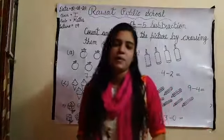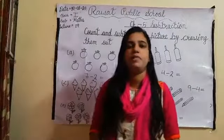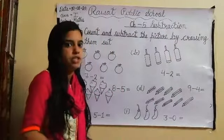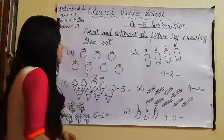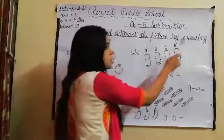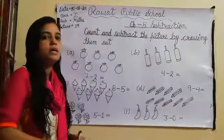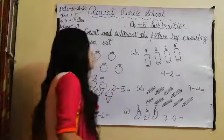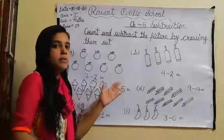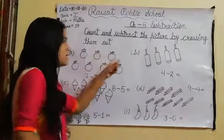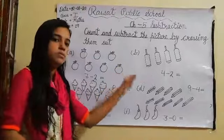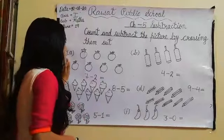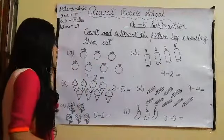Good morning to all, I hope you all are well. In today's class we will start a new chapter — Chapter 5: Subtraction. Question number 1: count and subtract the pictures by crossing them out. This means we have to count them, cross them out, and then subtract them. Let's start with question A.